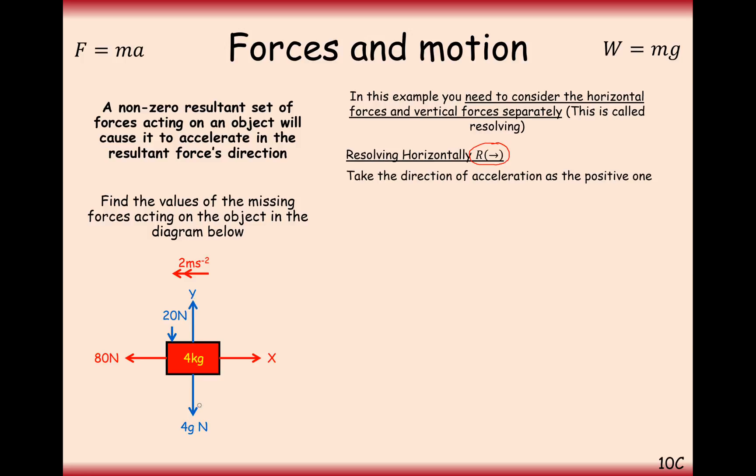We've got a couple of directions we need to resolve into here. We've got horizontal and vertical. Let's look horizontally first. We're going to treat left as the positive direction. 80 is going to be positive, X is going to be negative. When we substitute in our forces, we're going to have a positive force of 80, a negative force of X, because that's in the wrong direction in respect of our acceleration. And then that equals mass times acceleration, 4 times 2. Rearrange for X, and we get 72.